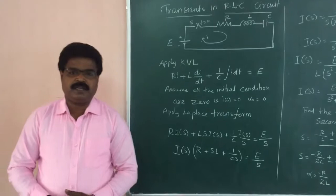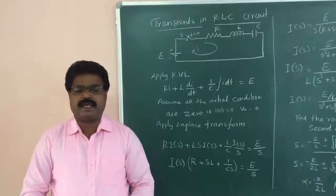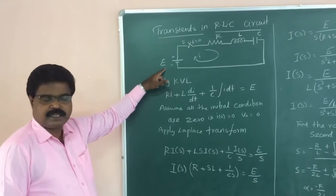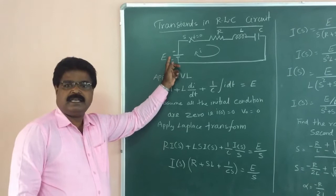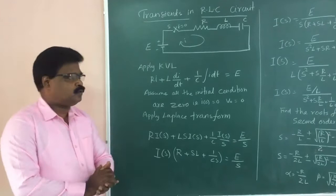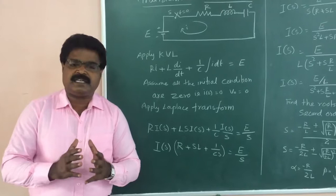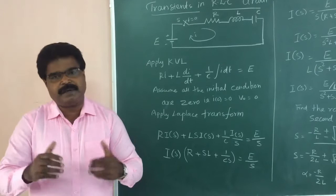In this, we are going to see transients in RLC circuits. We are considering a DC RLC circuit. The procedure for DC and AC are the same. The only difference is, instead of E in the case of DC, in the case of AC it is EM sin omega T. So our aim is to find the transient current for this, whether it may be DC or AC.